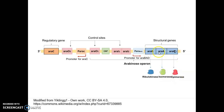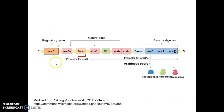To transcribe these three structural genes, there is a promoter referred to as the P-araBAD. There are control regions referred to as araI1 and araI2. These are the initiator regions where the araC protein in the dimeric state along with arabinose comes and binds. There is also the catabolite activator protein (CAP) binding region which enhances binding of RNA polymerase, and two operator regions araO1 and araO2 for binding of the araC repressor. The promoter for araC transcribes the araC gene, which gets transcribed and translated into the araC protein.